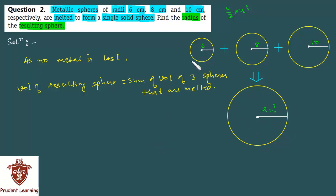So let us assume the radius of first sphere as r1, next one as r2 and final one as r3. So here we have volume of resulting sphere as 4 by 3 pi r cube and volume of first sphere as 4 by 3 pi r1 cube, next one as 4 by 3 pi r2 cube and final one as 4 by 3 pi r3 cube.